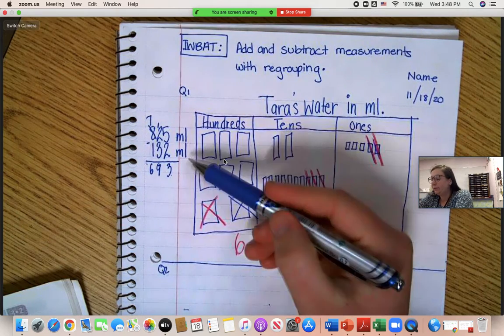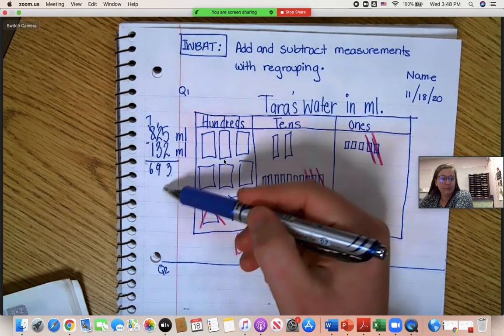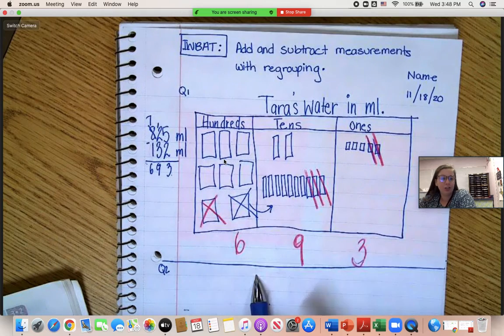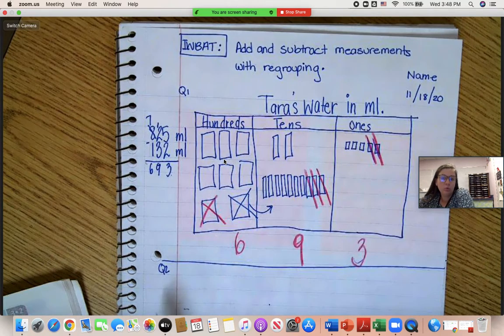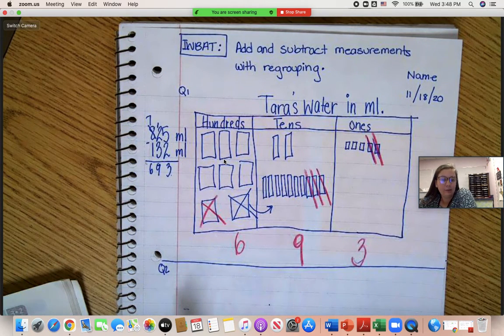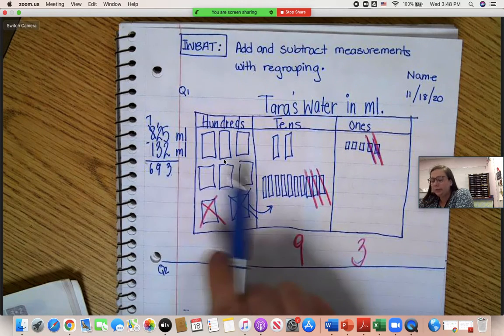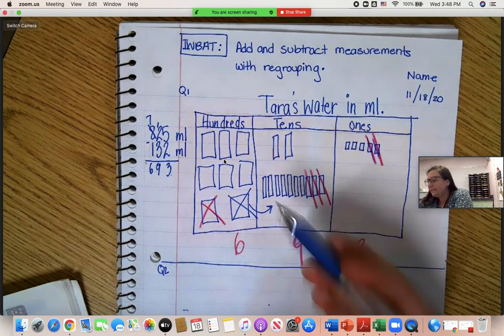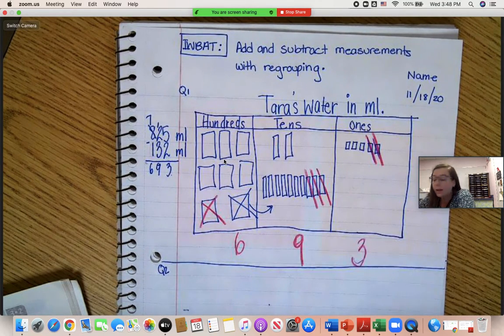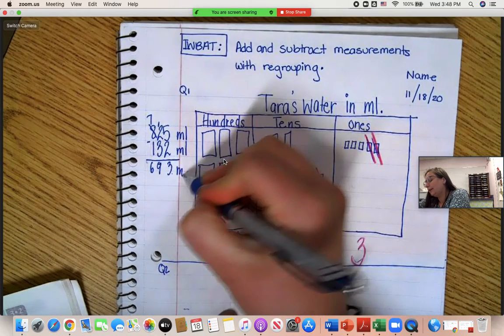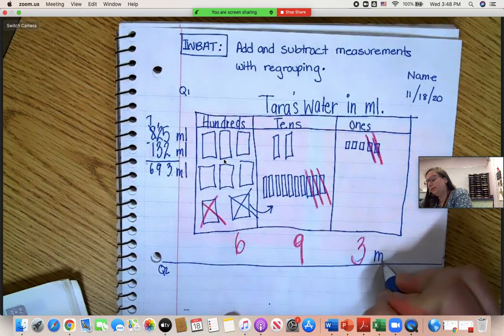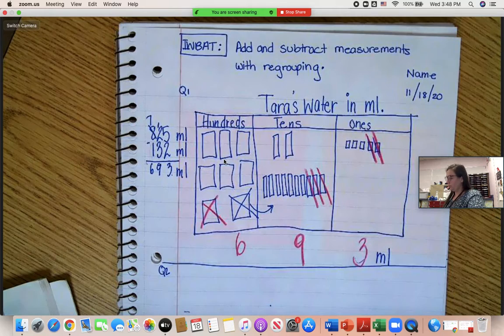Okay, we did that in the standard algorithm. We did that in the place value chart. Did we get the same answer? We did. 693. So, it's either way you like doing it. All right, 693 what? Milliliters. All right, we always put a label. Milliliters. Okie dokes.